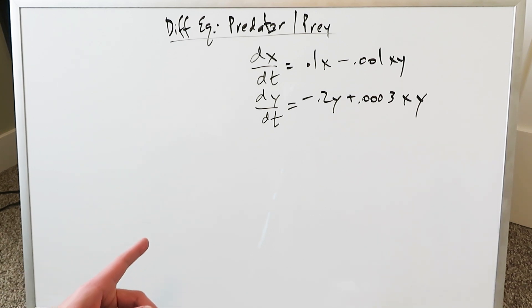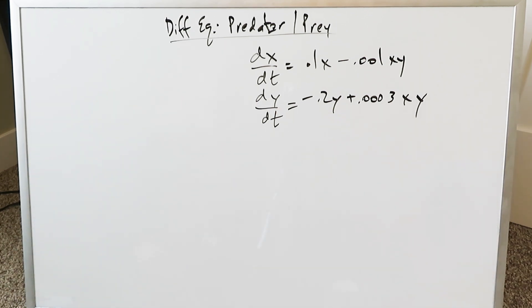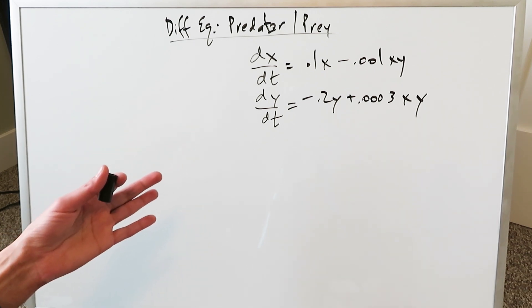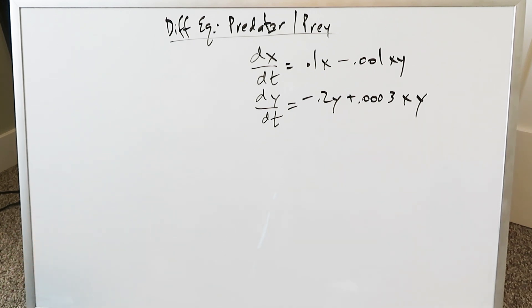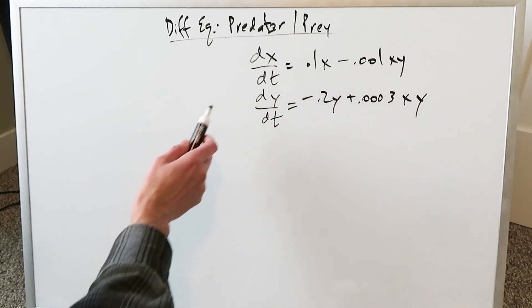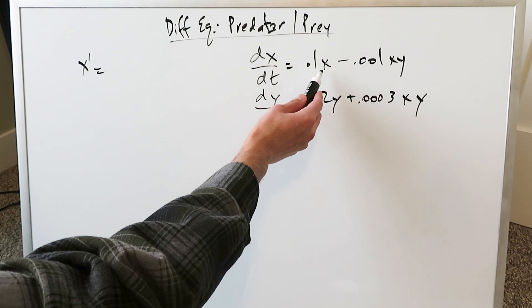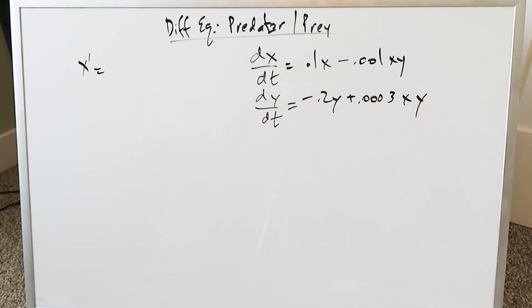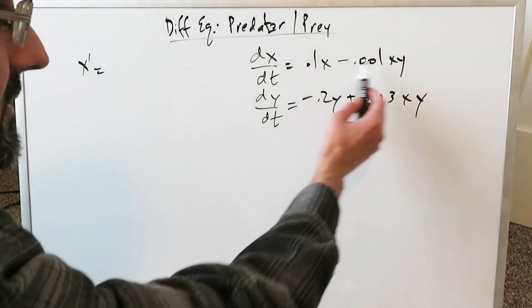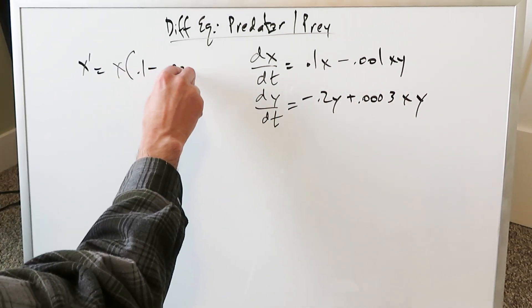When you're given this dx over dt for each of these, you have to first start off by determining which of these represent the predator in terms of the variable. Is the predator represented by x, or the prey by y, or vice versa? When you're looking at dx over dt, x prime is equal to — look at this equation — 0.1x minus 0.001xy. There's a common variable x; you isolate it and you have 0.1 minus 0.001y.